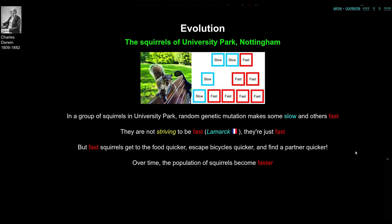Here are the squirrels of University Park Nottingham. Some squirrels are naturally slow and some are naturally fast — not deliberately fast or slow, not striving to be fast as Lamarck might have said. Fast squirrels get to the food first when you throw crumbs out, they escape bicycles and other hazards, and in a race to find a partner, the fast ones might find a sexual partner first. Over time, the number of fast squirrels will generally increase and the number of slow squirrels will tend to decrease. But there's nothing purposeful or deliberate about it — it's just random variation that happens to make them more adapted to the current situation.